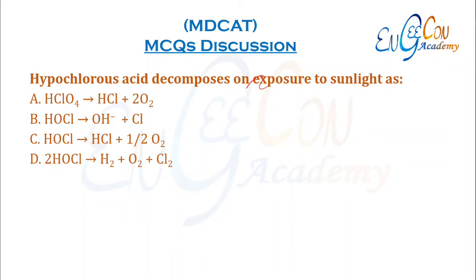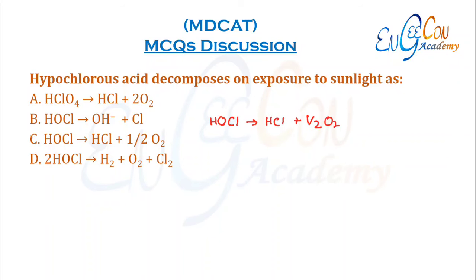Hypochlorous acid decomposes on exposure to sunlight. Hypochlorous acid is HOCl. On exposure to sunlight, it decomposes into HCl and ½O2, as given in the book. C is the correct option.